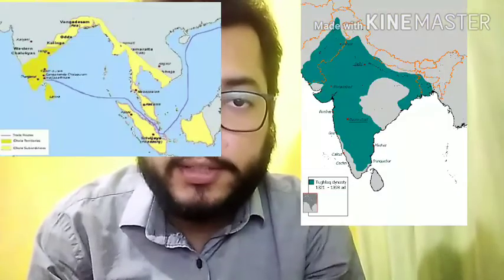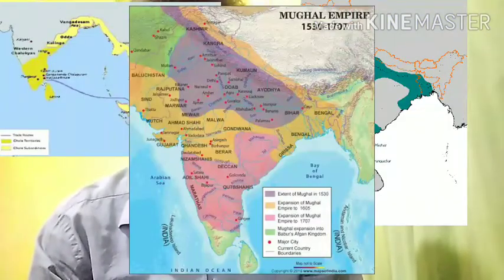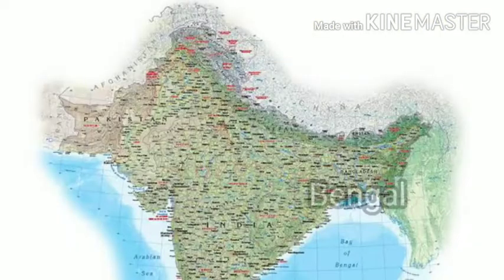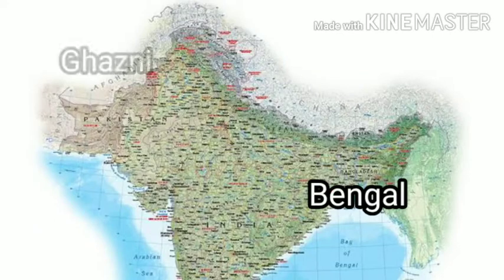We know that big empires like the Cholas, the Delhi Sultanate, and the Mughals encompassed a large area of the subcontinent. A Sanskrit Prashasti praised Giyasuddin Balban and mentioned the extent of his empire from Bengal in the east to Ghazni in Afghanistan in the west. Historians usually believe that these claims were exaggerated, and try to make sense of why rulers claimed to have conquered such large regions.